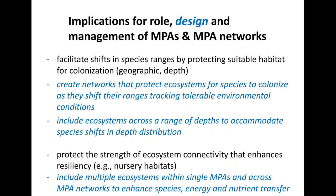Another role is to facilitate shifts in species ranges by protecting suitable habitat for colonization — whether geographic shifts or shifts in depth. Create networks that protect ecosystems for species to colonize as they shift their ranges, tracking tolerable environmental conditions. Include ecosystems across a range of depths to accommodate species shifts in depth distribution. Additionally, protect the strength of ecosystem connectivity that enhances resiliency — a classic example is nursery habitats, where protecting young that eventually recruit to ecosystems offshore enhances the state of those offshore ecosystems. Include multiple ecosystems within a single MPA and across networks to enhance species, energy, and nutrient transfer among ecosystems.